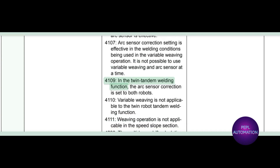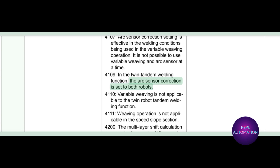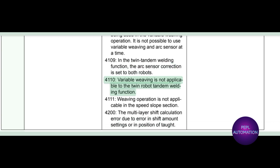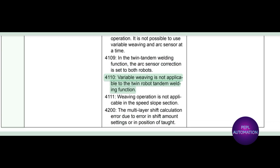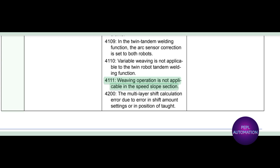Subcode 4109: in the twin tandem welding function, the arc sensor correction is set to both robots. Subcode 41010: variable weaving is not applicable to the twin robot tandem welding function. Subcode 4111: weaving operation is not applicable in the speed slope section.